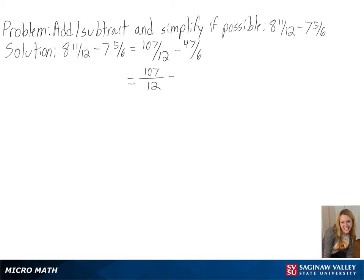In this case, our common denominator can be 12, so we don't have to multiply the first fraction, but we are multiplying the second fraction by 2 over 2 since that is equal to 1.